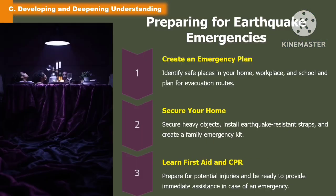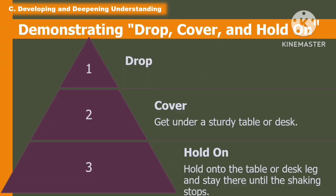The following are ways of preparing for earthquake emergencies. The first is to create an emergency plan: identify safe places in your home, workplace, and school, and plan evacuation routes. The second is to secure your home: secure heavy objects, install earthquake-resistant straps, and create a family emergency kit. The last is to learn first aid and CPR — prepare for potential injuries and be ready to provide immediate assistance in case of an emergency.